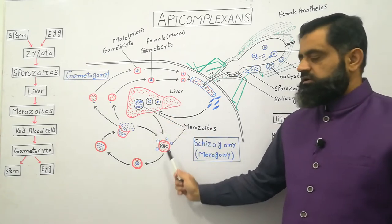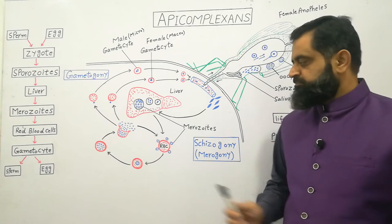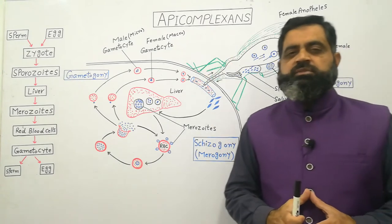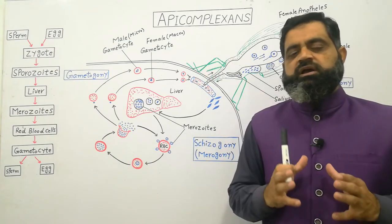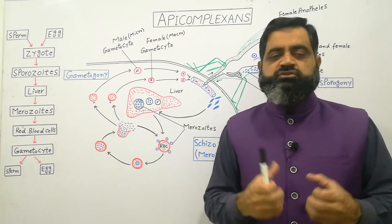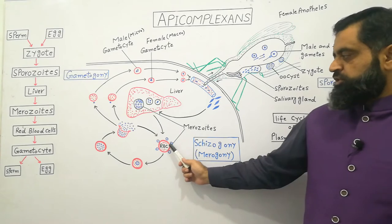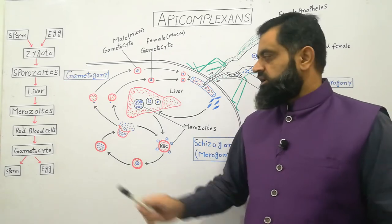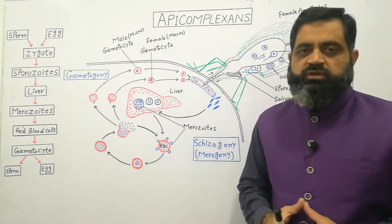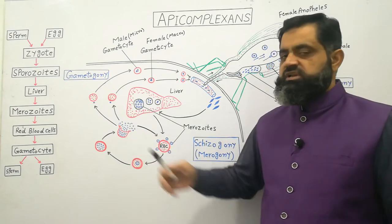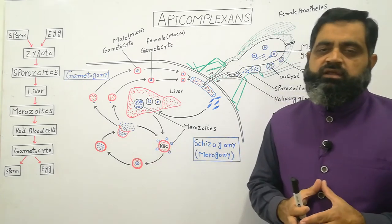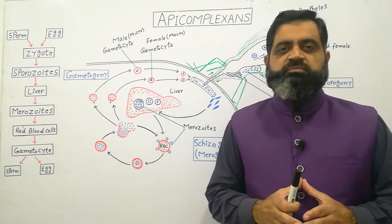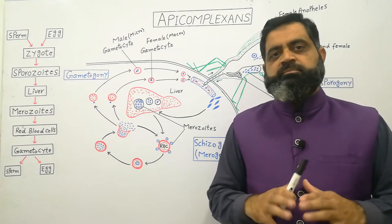The merozoites attack the red blood cells (RBCs) present in the human blood. They enter the RBCs with the help of the apical complex — that is why these organisms are called Apicomplexa, because the apical complex helps them penetrate the living cells of different organisms. Once inside the RBCs, the merozoites multiply by mitosis. After this, the cells burst like a balloon and all the newly produced merozoites are released to attack other red blood cells. This process continues several times until millions and billions of RBCs burst simultaneously.